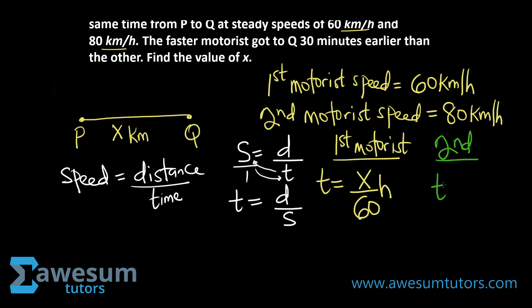For the second motorist, the time is also x — the same distance x — over the speed of 80. So the second motorist's time is x over 80 hours.